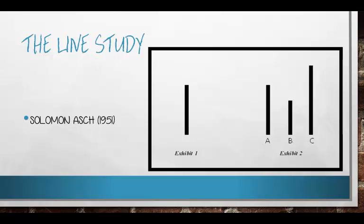Of those eight to ten students, only one was an actual test subject — the rest were confederates. Say you're the real student: you sit in the middle, and when asked which line matches, the first student says B, the second says B, the third says B — and then it comes to you. Will you say A? Over 35% of actual test subjects conformed continuously, and the vast majority admitted to getting at least one answer wrong on purpose, even though they knew it was wrong, simply because they started to stand out and feel uncomfortable.